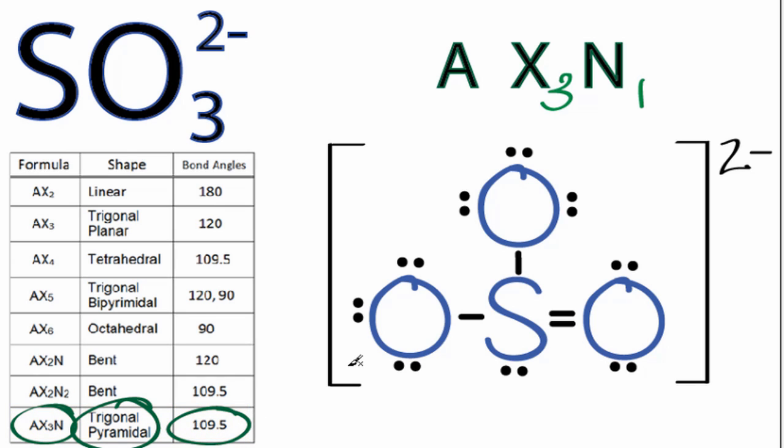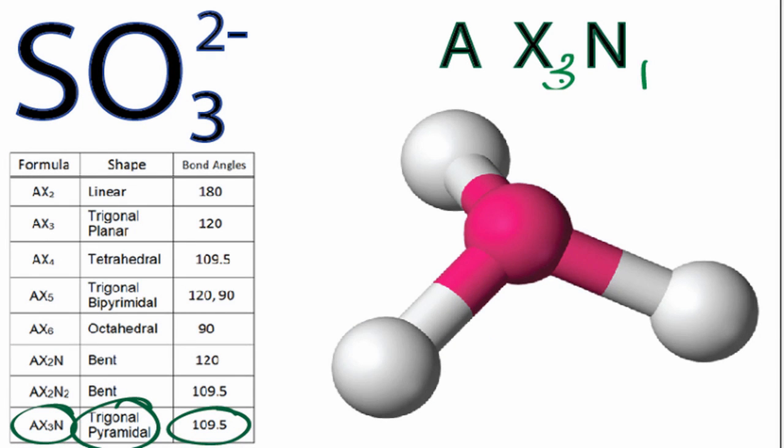If we looked at the three-dimensional structure for a trigonal pyramidal molecule, it would look like this. The red, that's the central sulfur, and the oxygens, those are the white. They aren't the correct colors, but the shape's the same, and don't forget we have a lone pair of electrons kind of floating there on top of that central sulfur.